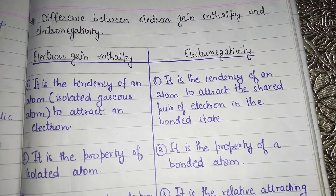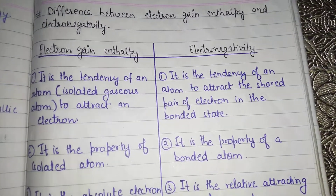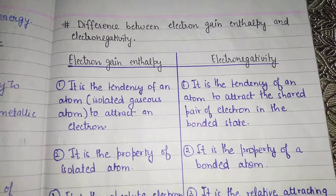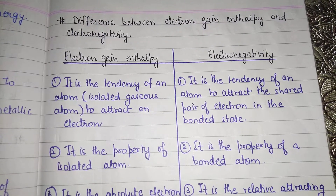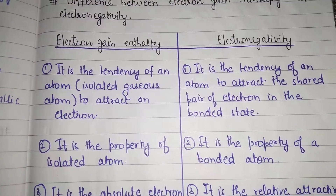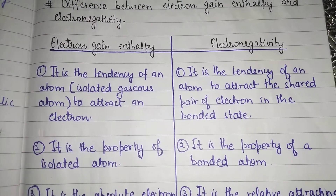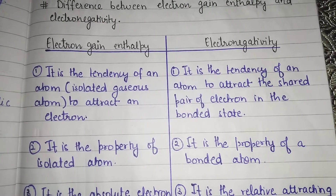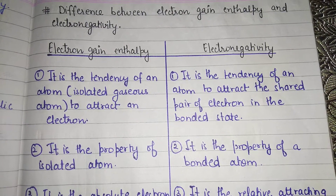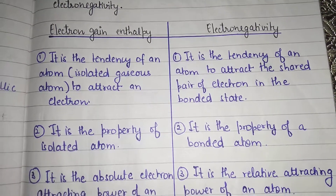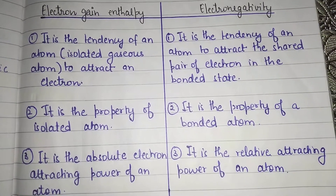The second difference is that electron gain enthalpy is the property of an isolated atom — it is the concept of a single atom. Whereas in the case of electronegativity, it is the concept of a bonded atom.